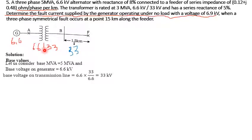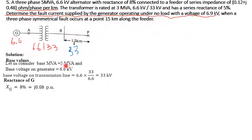Next we have to draw a reactance diagram, but before that we calculate the per-unit reactances of the generator, transformer, and transmission line. For the generator, the formula is: X_pu_new = X_pu_old × (MVA_base_new / MVA_base_old) × (kV_base_old / kV_base_new)². Since the MVA and voltage ratings are both 5 MVA and 6.6 kV, everything cancels, giving us 8% directly — hence j0.08 per unit.